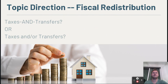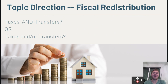Let's talk about the topic direction, about fiscal redistribution in particular. There is a debate in debate spaces — more than in the actual literature — about what is meant by fiscal redistribution. Pretty much every definition out there says that fiscal redistribution means taxes and transfers. The problem is that word 'and' in between taxes and transfers. Does that 'and' imply both, or does it imply either?